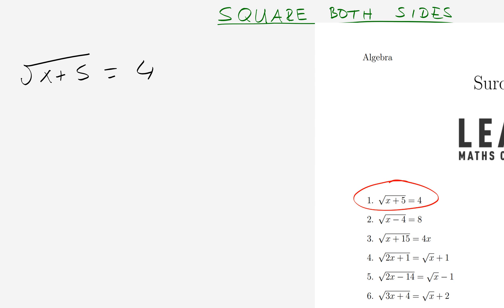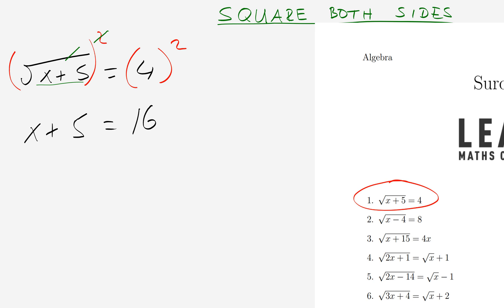As I already said, we want to square both sides — the left-hand side and the right-hand side. Analyzing x plus 5 here: this x plus 5 has been square rooted and squared at the same time, so those two operations cancel each other out. My next line is simply x plus 5 equals 16, since 4 squared is 16. So x is equal to 16 minus 5, which gives x equals 11. That's my solution.